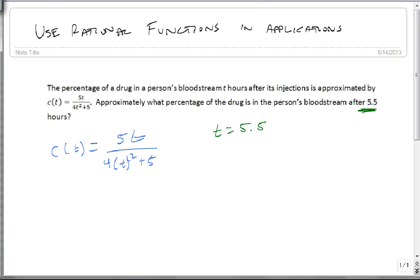So what we really want to know in this problem is what's c of 5.5? That's going to be 5 times 5.5 divided by 4 times 5.5 squared plus 5.